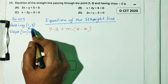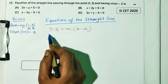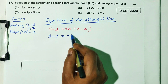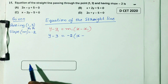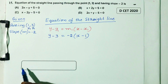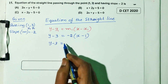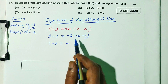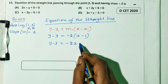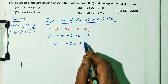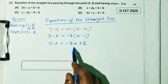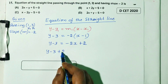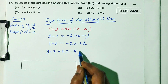Substituting: passing point x1 equals 1, y1 equals 3, slope m equals minus 2. So y minus 3 equals minus 2 into x minus 1. Expanding: y minus 3 equals minus 2x plus 2.